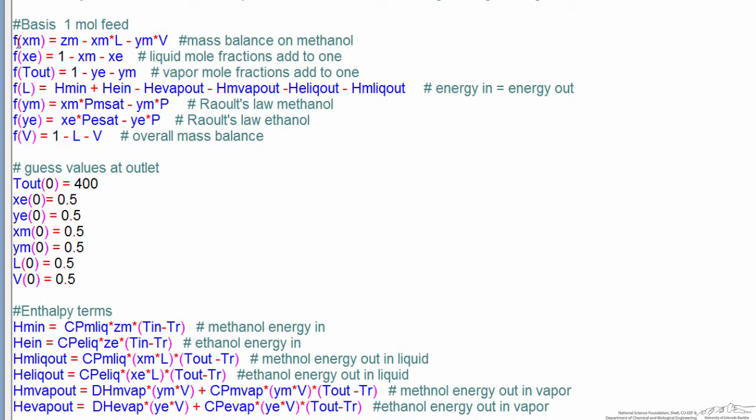And on the left side we use F for function, and in parentheses we indicate the variables we're solving for. So in this case we're solving for the mole fraction of methanol in the liquid phase, mole fraction of ethanol in the liquid phase, the outlet temperature, the amount of liquid where a basis is one mole, and the amount of vapor.